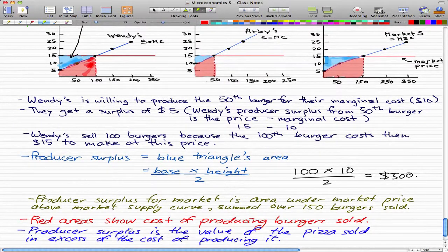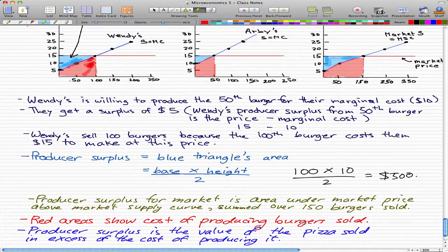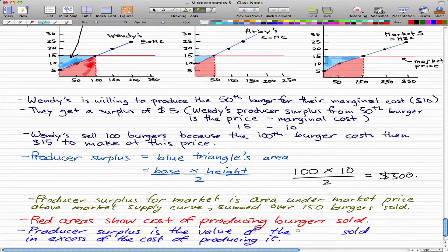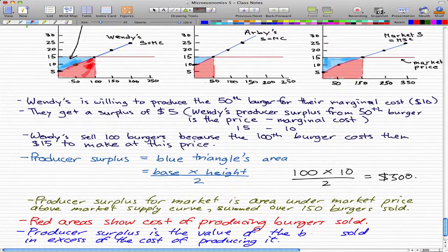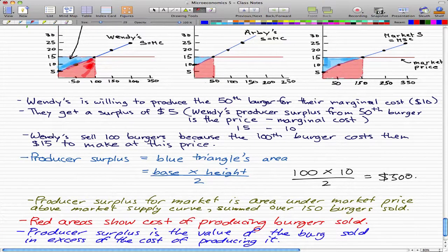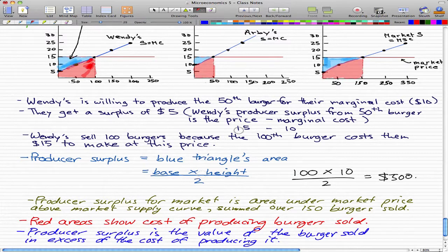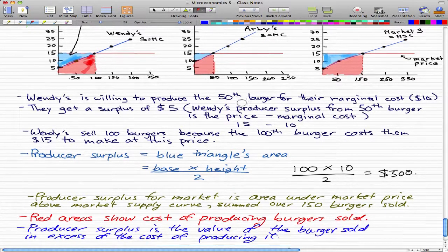So the producer surplus is the value of the burger sold in excess of the cost of producing it. And the cost is our red area and the producer surplus is the blue area. And that's all you need to know about producer surplus.